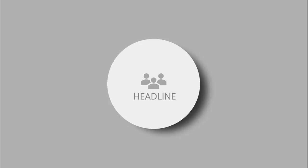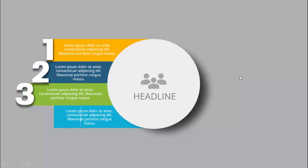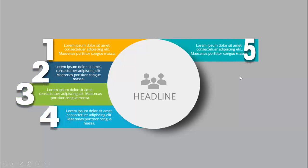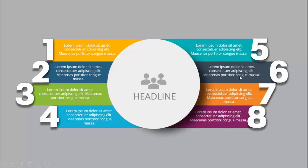In today's tutorial I'm going to show you how to create an eight-options infographic slide in PowerPoint. This is how the slide looks — I have added an oval shape with an icon, you can add your headline here, and I've added a shadow effect. When I click it, it will show the first option with this color combination, then the second, third, fourth, and the right side shows the fifth through eighth.